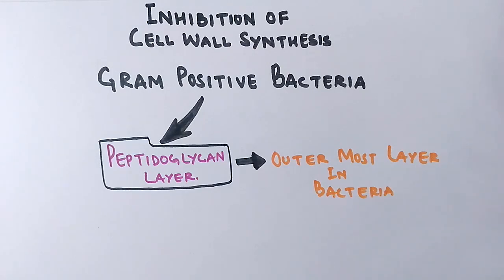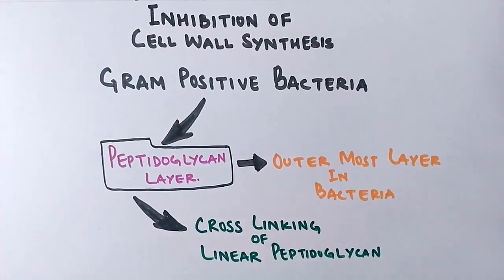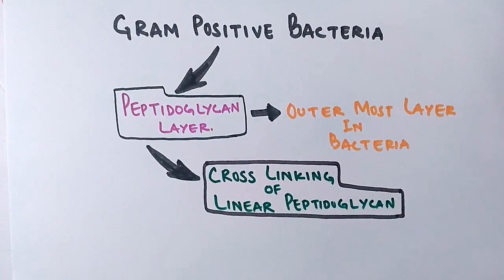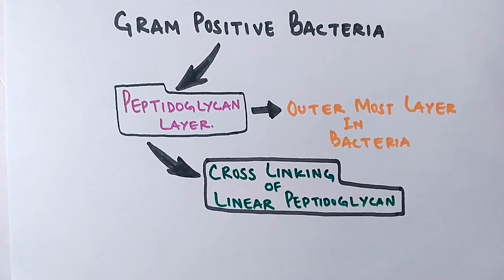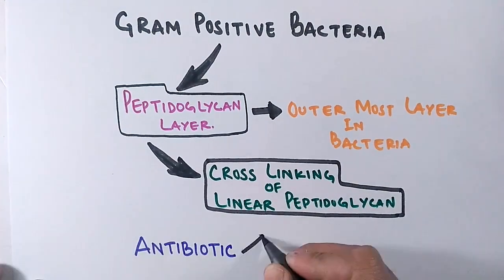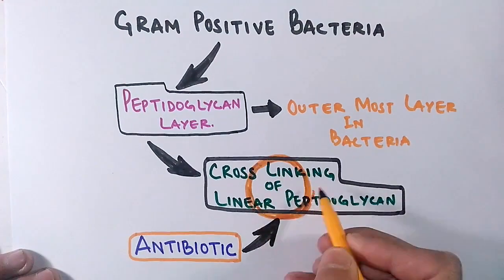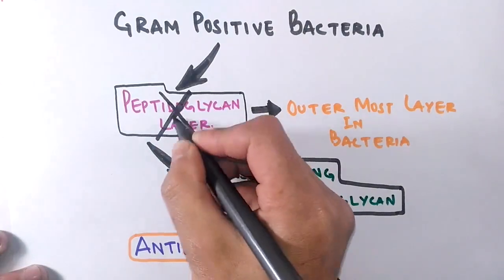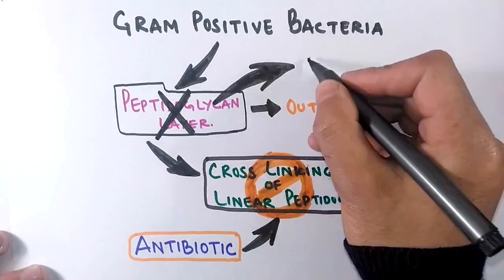And in its making, there is a cross-linking of linear peptidoglycan chains. When there is cross-linking of linear peptidoglycan chains, the peptidoglycan layer is made finally. In this process, the antibiotics inhibit the cross-linking of linear polypeptide chains, thereby the peptidoglycan layer is not made. When the peptidoglycan layer is not made, cell death occurs.